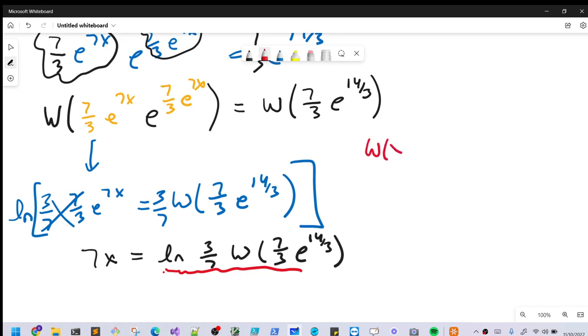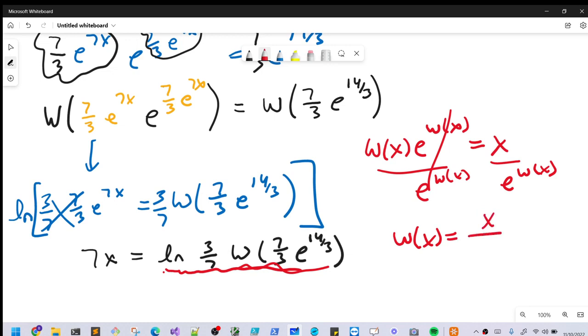So we have this identity, Lambert W x times e to the Lambert W x equals x. And then what I want to do is, okay, we have a Lambert W here. If we divide by e to the W x on both sides, we come up with this just in a different form. Same thing, but we have Lambert W x equals x over e to the Lambert W x.